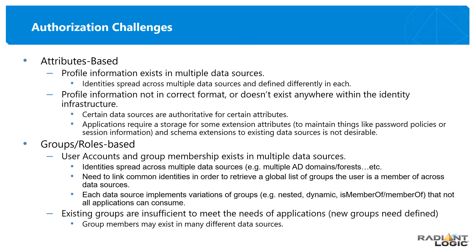Generally, users are authorized based either on their profile containing a specific attribute, or more often on what groups they're a member of. Some challenges for attribute-based authorization include having the same user accounts in different data silos, with profile information distributed across those silos. Sometimes attributes aren't stored in the format expected by an application, requiring translations or computations. Applications also sometimes need a place to store certain attributes — related to session information, last login, or password policy — and existing data source owners are often not excited about extending schemas to accommodate new application requirements.